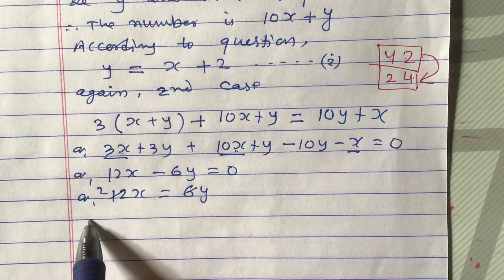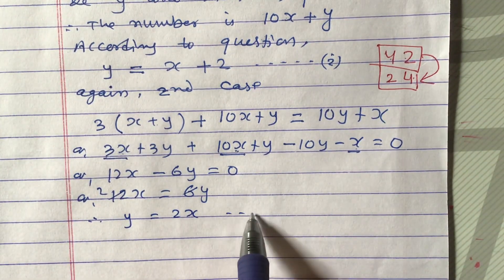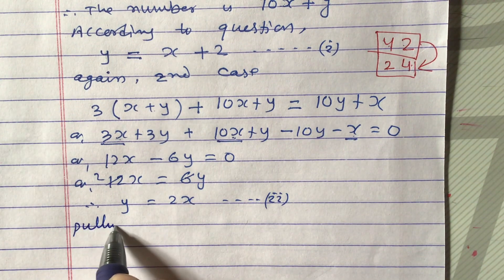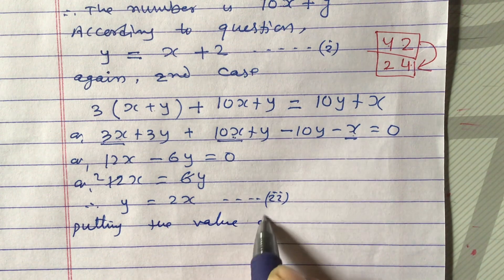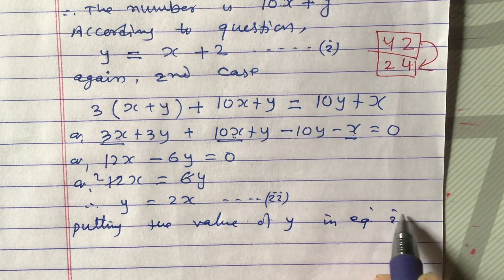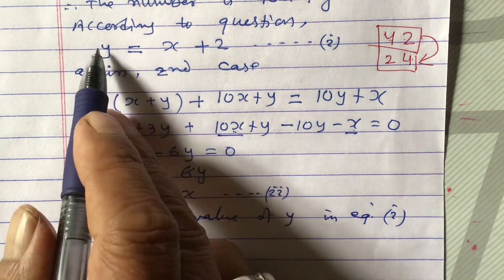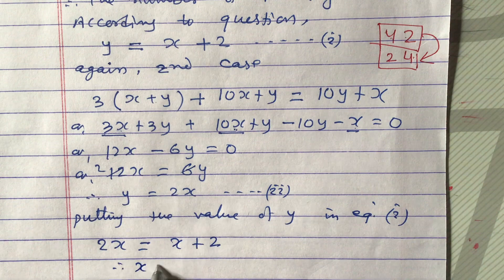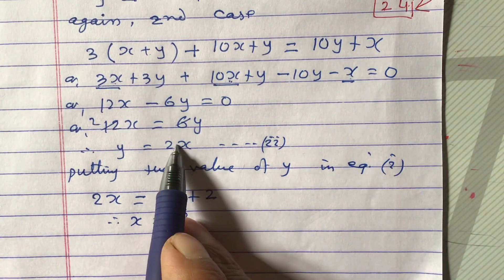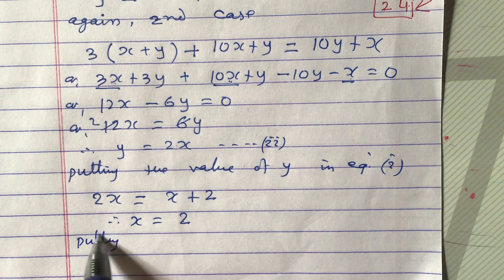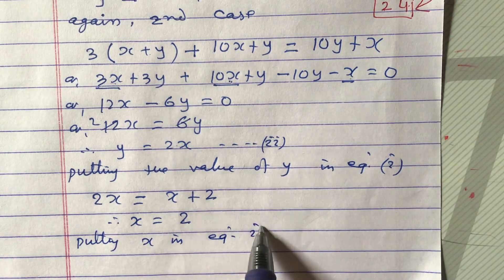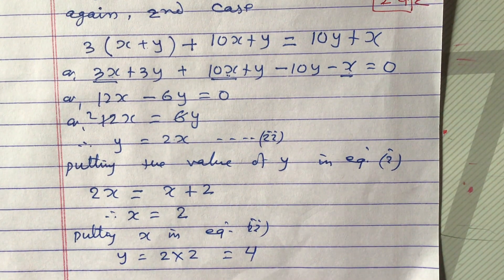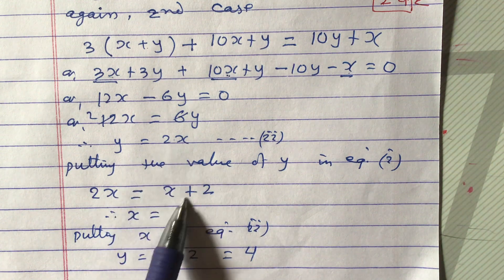Now substituting the value of y from equation 2 into equation 1: putting y = 2x into x + 2 = y gives 2x = x + 2, so x = 2. Then putting x = 2 into equation 2: y = 2 × 2 = 4. We have found x = 2 and y = 4.